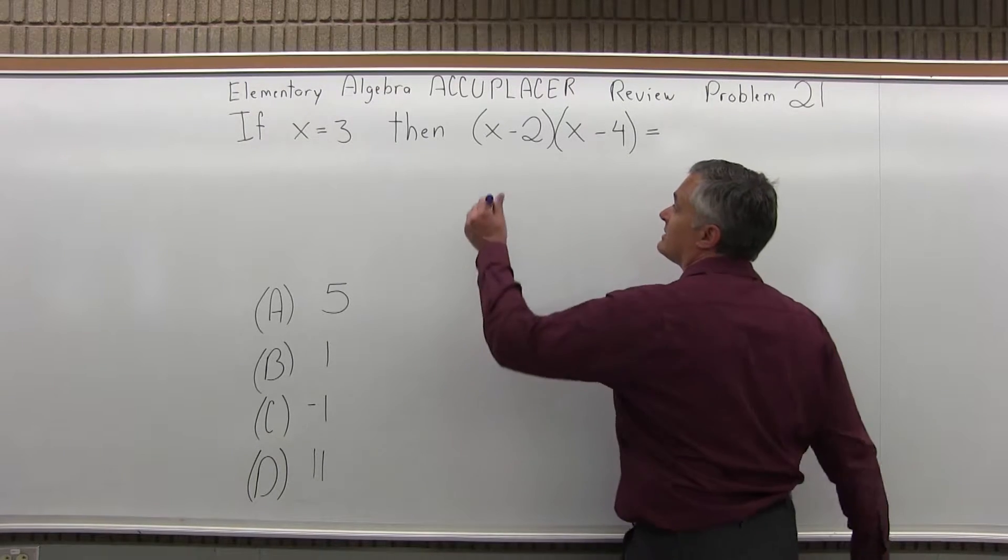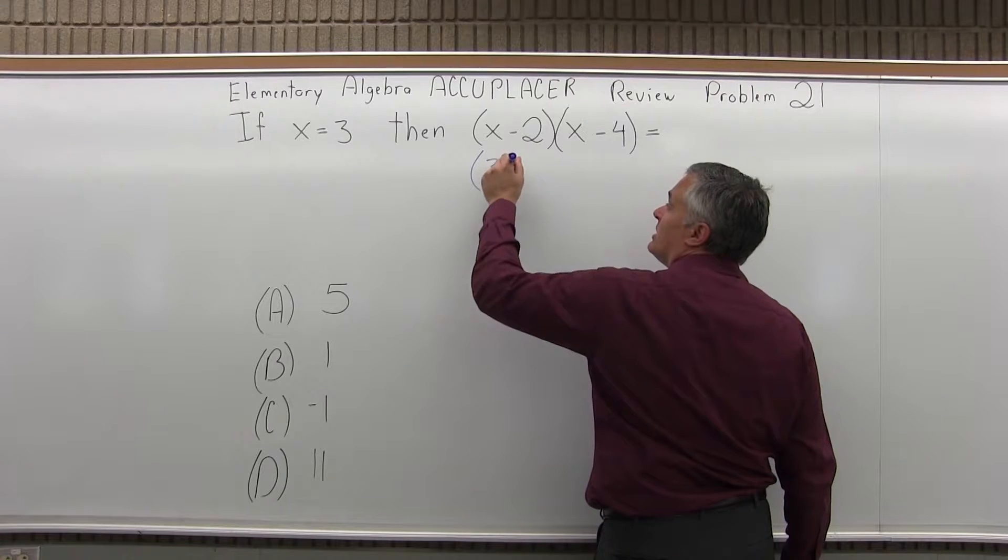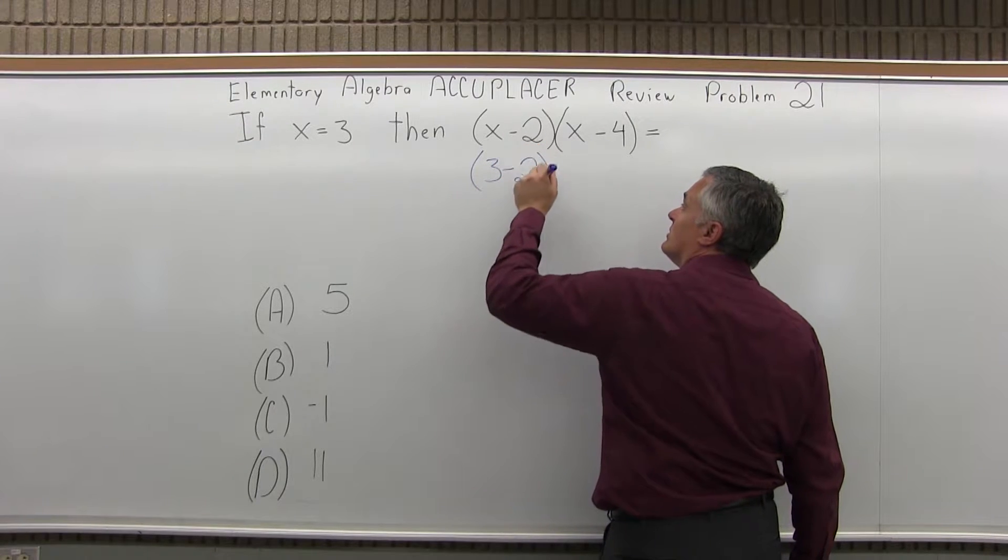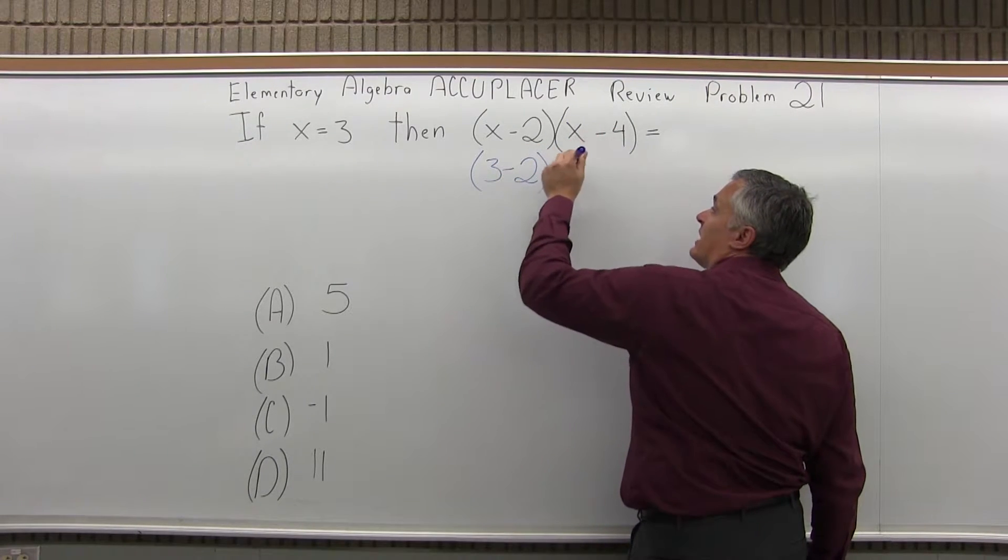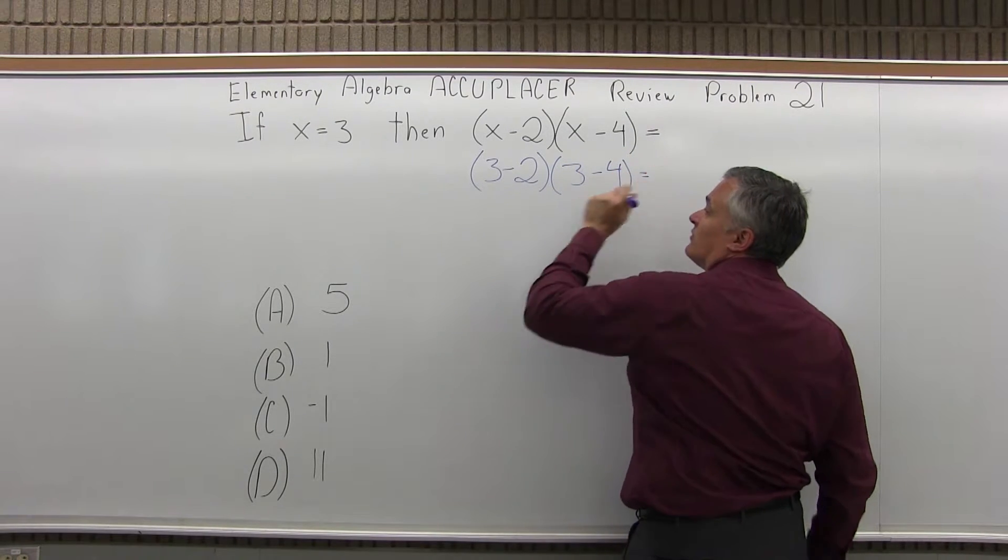Well, let's go ahead and put in a 3 for x. So the x minus 2 will be 3 minus 2, and then the x minus 4 will be 3 minus 4.